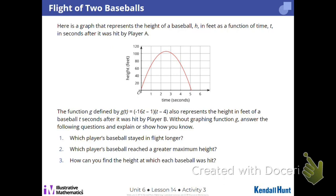So you're given a similar context, two different versions of the function. Player A, you have this graph. Player B, you have this function. They're hitting a baseball, and this is what's happening over time. You need to answer these questions. Which one stayed in flight longer? Which one reached a greater height? And how can you find the height that each one was hit? Now, if you get stuck, think big ideas, all right? Think stuff like, the y-intercept happens when? X is zero. The x-intercept happens when? Y is zero. Okay. Stuff like that. Let's go.